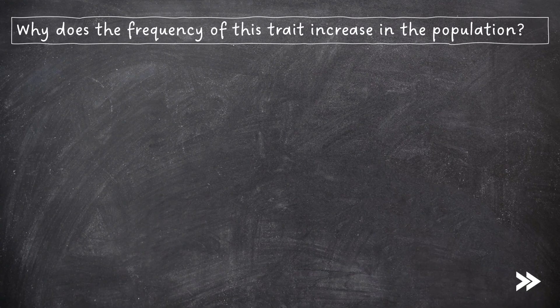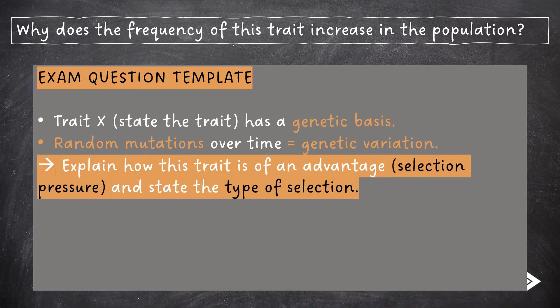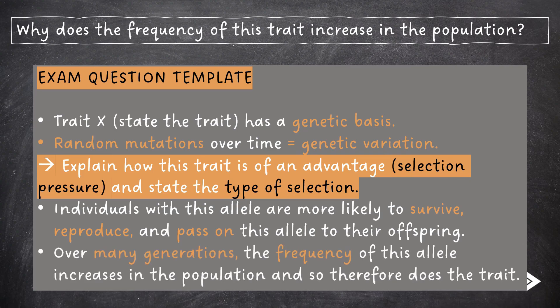Then you'd be asked to explain how, over time, the frequency of this trait increases in the population. First, state that the trait has a genetic basis. Random mutations over time mean that there is genetic variation within the species. Next, explain how this trait is of an advantage, and for this you need to mention the selection pressure — i.e. why some individuals would die and why some would not — and state the type of selection, i.e. is it directional, stabilising or disruptive. Then say that individuals with this allele are more likely to survive, reproduce and pass on this allele to their offspring. Over many generations, the frequency of this allele increases in the population, and so therefore does this trait.